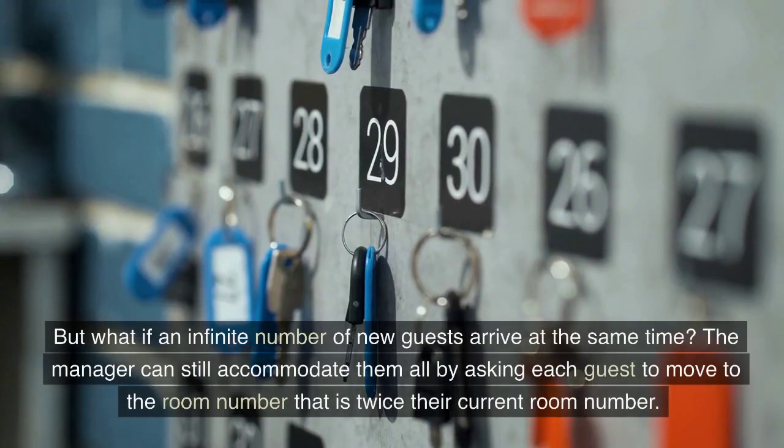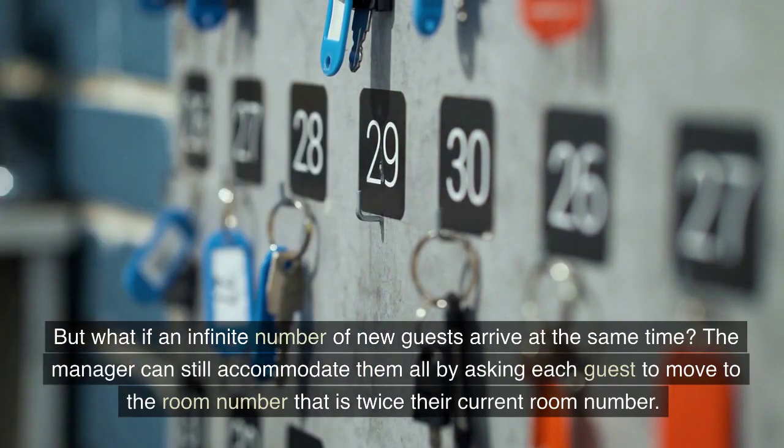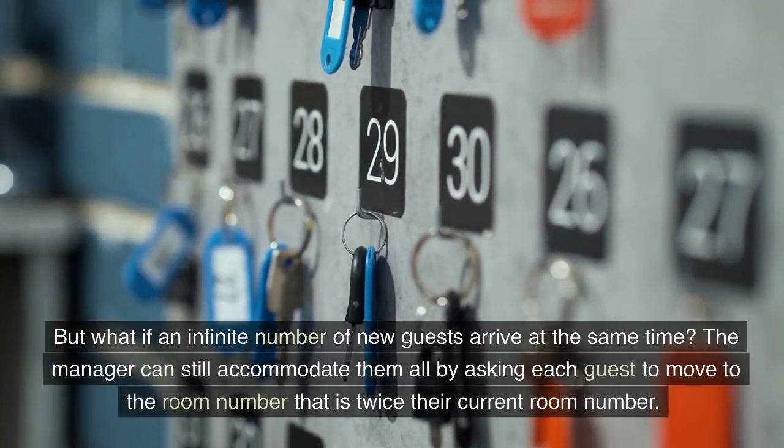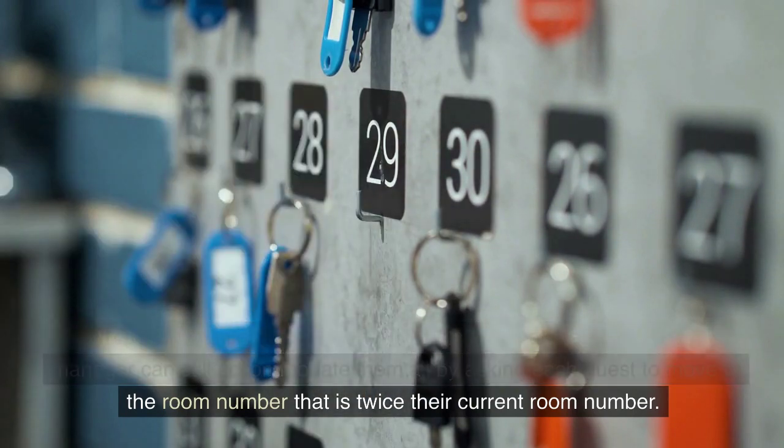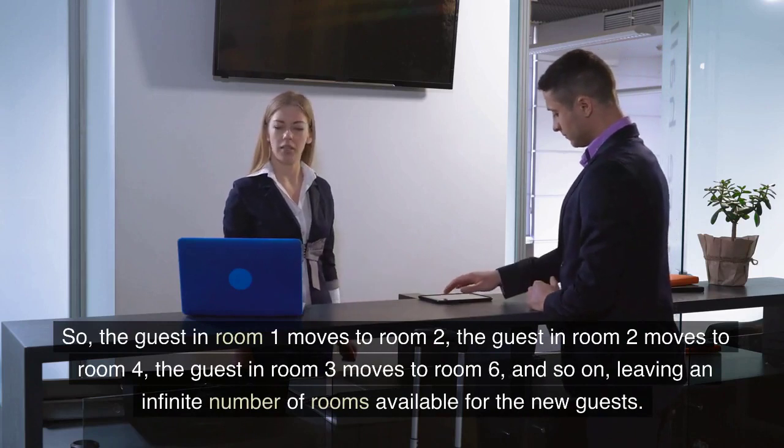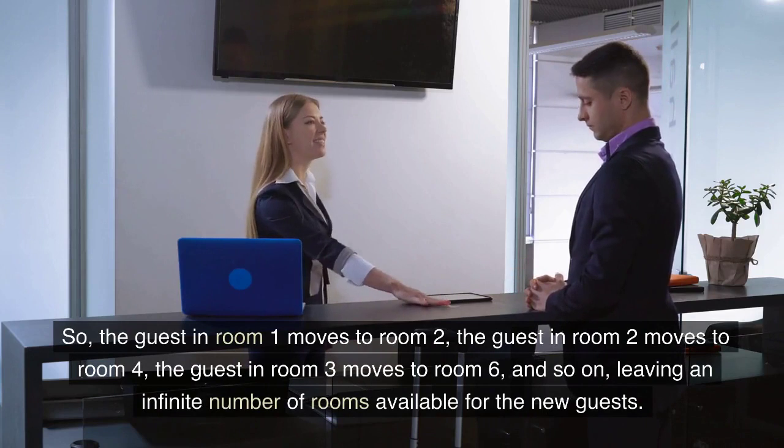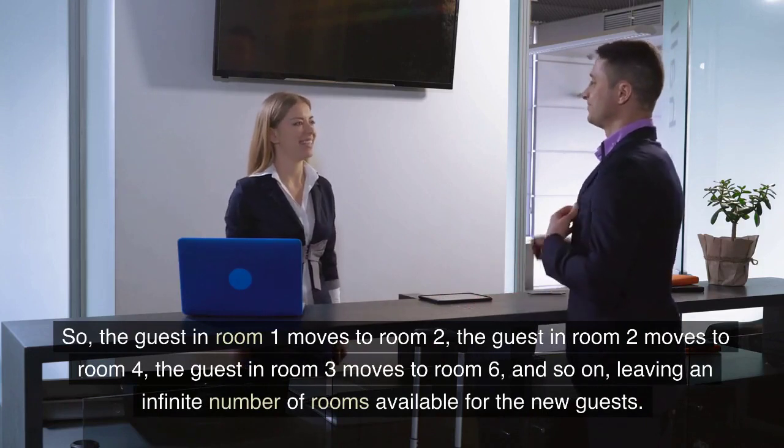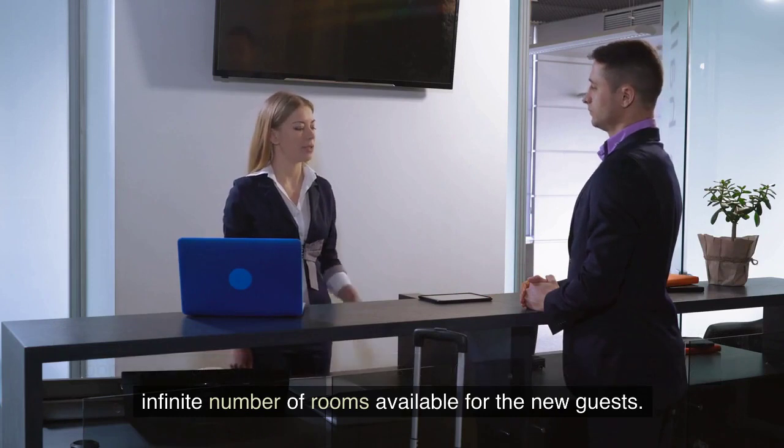But what if an infinite number of new guests arrive at the same time? The manager can still accommodate them all by asking each guest to move to the room number that is twice their current room number. So, the guest in room 1 moves to room 2, the guest in room 2 moves to room 4, the guest in room 3 moves to room 6, and so on, leaving an infinite number of rooms available for the new guests.